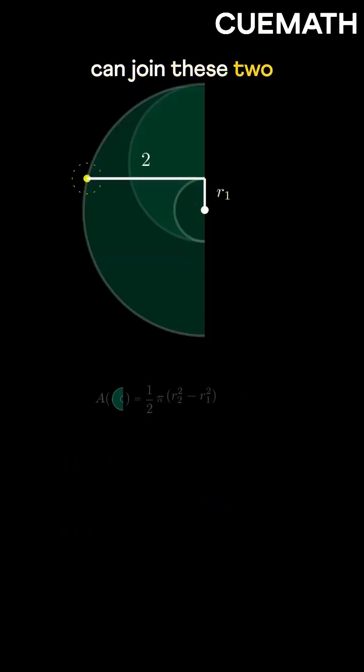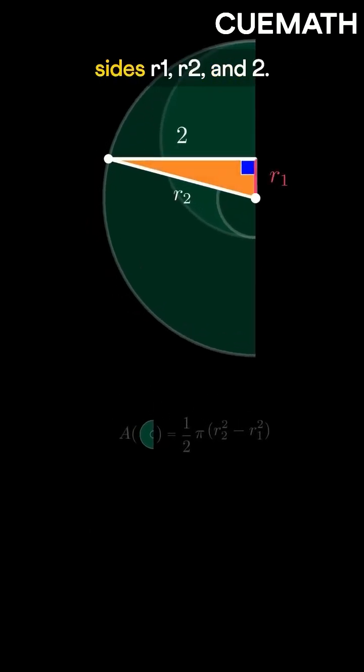To find this value, we can join these two points to form a right triangle with sides R1, R2, and 2. Applying the Pythagorean theorem, we get this value as 4.